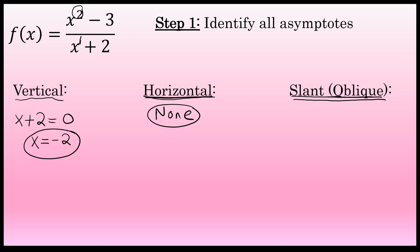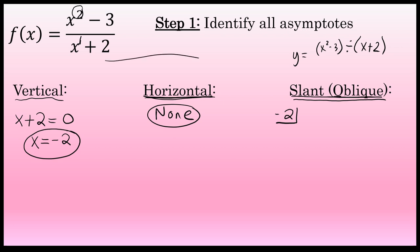That slant asymptote can be found by dividing x squared minus 3 by x plus 2 and ignoring the remainder. I'm going to do this using synthetic division. The first step is to take the zero of the denominator, negative 2, put it in a box, and then list the coefficients of the numerator.